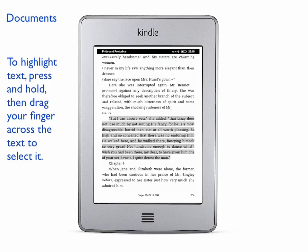If you want to highlight a particular text and make annotations, all you do is press your finger against the screen and drag it across the text that you want to select. It will show up like this.